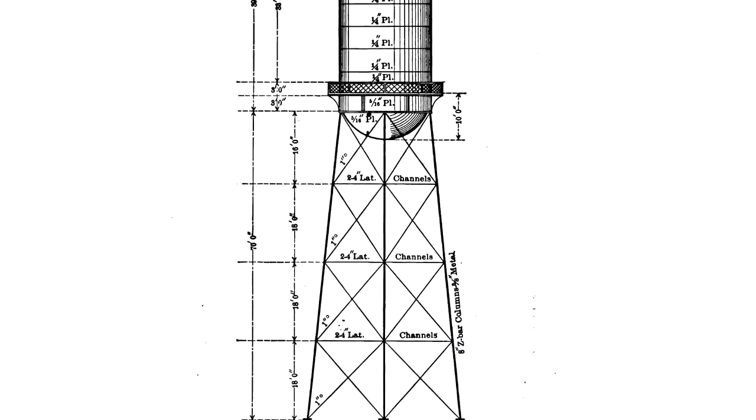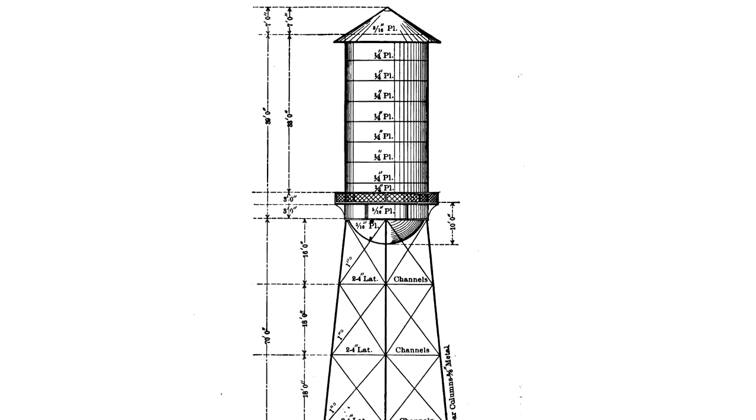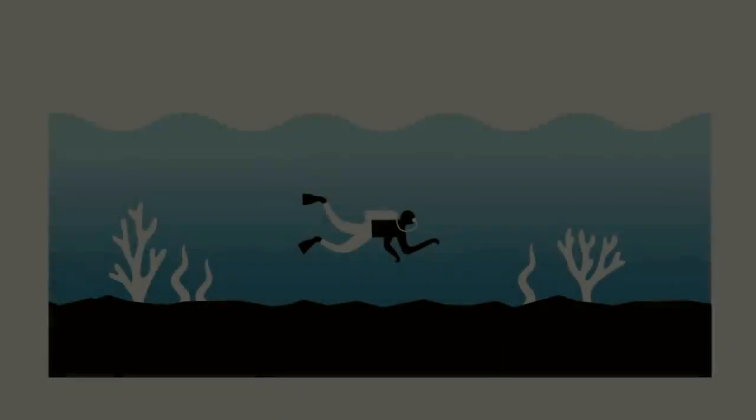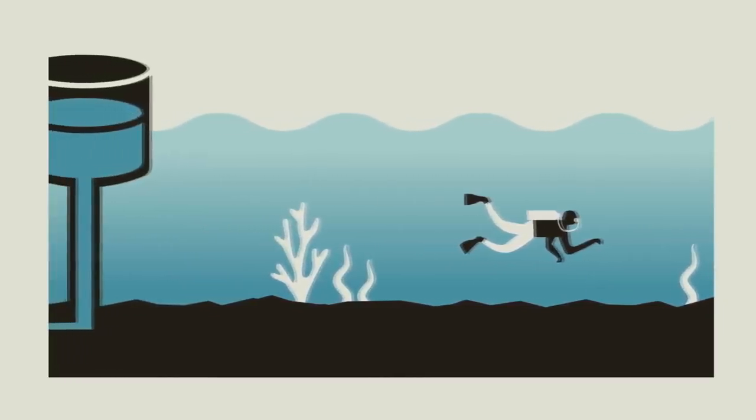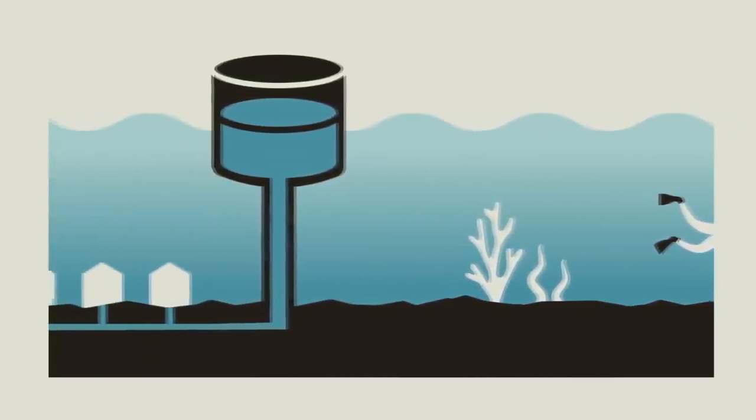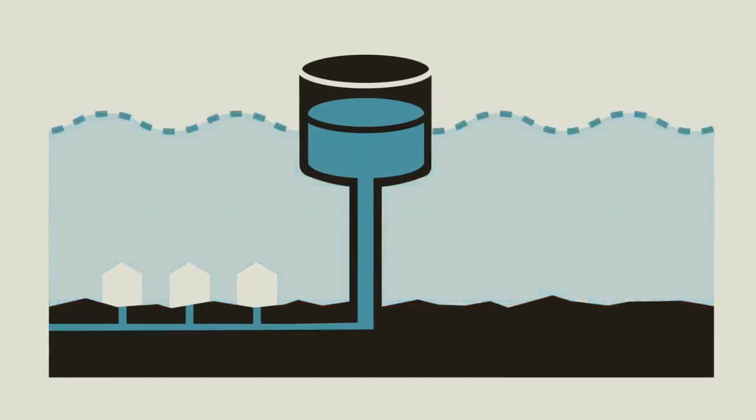But how elevated do they need to be? You might know that pressure within a body of water is related to the depth. The deeper you go, the greater the pressure. Just like in a pool or the ocean, a water distribution system has the same relationship between depth and pressure. It just happens to be confined within a series of pipes. So you can imagine a water distribution system as a virtual ocean under which we all live, and the water surface in elevated storage tanks represents the surface of the virtual ocean. Imagining a water system this way makes it easy to see the challenge of delivering water to customers at the right pressure.